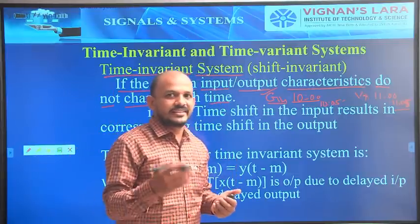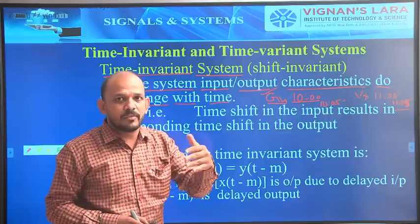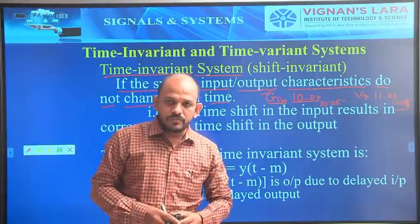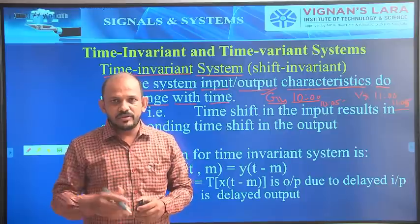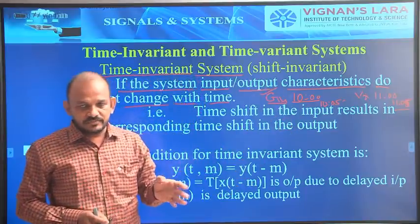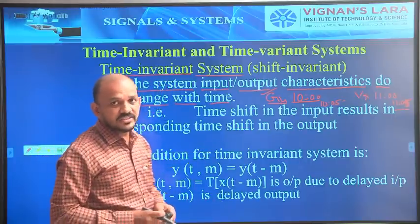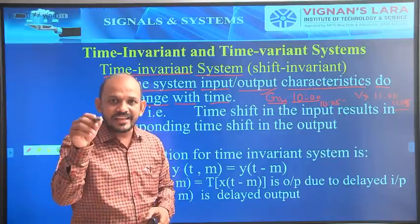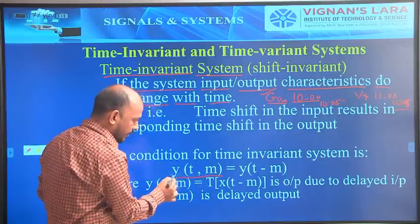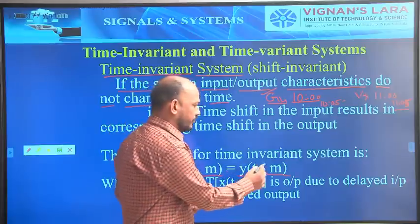After explaining theoretically, we can represent this in mathematical equation form. The condition for time invariant systems is: y(t, m) = y(t − m). While we prove time invariant systems mathematically, we use this condition. If you want to call a system time invariant, it has to satisfy this condition.